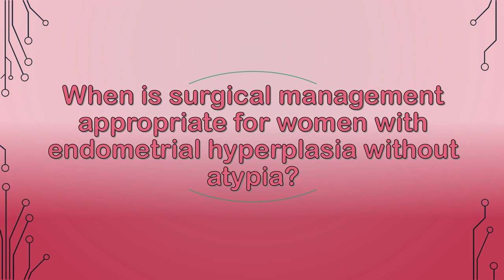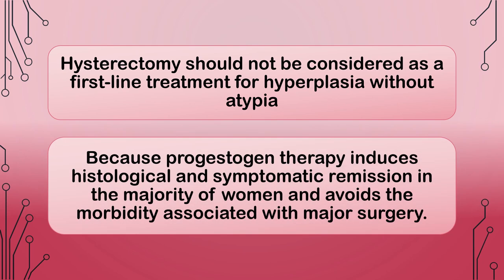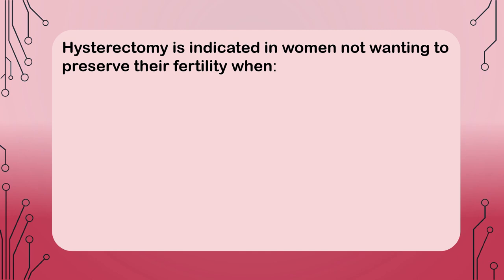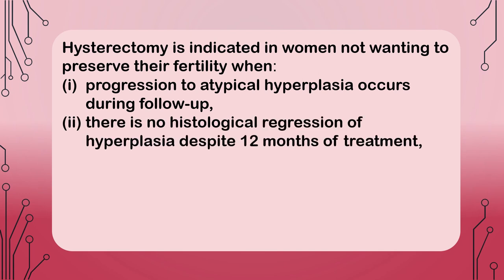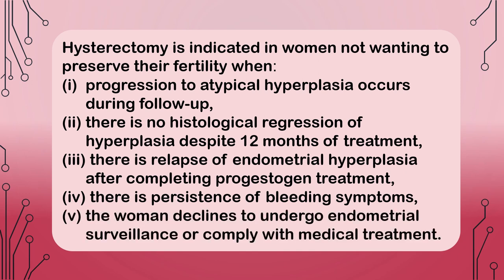When is surgical management appropriate for women with endometrial hyperplasia without atypia? Hysterectomy should not be considered as a first-line treatment because progestogen therapy induces histological and symptomatic remission in the majority of women and avoids the morbidity associated with major surgery. Hysterectomy is indicated when: progression to atypical hyperplasia occurs during follow-up; there is no histological regression despite 12 months of treatment; there is relapse of endometrial hyperplasia after completing progestogen treatment; there is persistence of bleeding symptoms; or the woman declines endometrial surveillance or compliance with medical treatment.